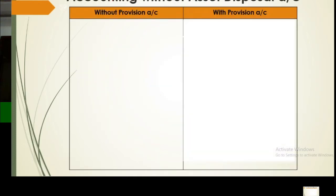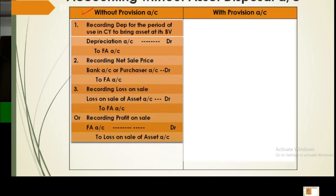When working without provision, your journal entries are: first, charge depreciation for the period — depreciation account debit, fixed asset account credit. Then record the sale — bank account debit, fixed asset account credit. Then record the loss — loss on sale debit, fixed asset account credit. Or if profit: fixed asset account debit, profit on sale credit. These are the three entries without provision.